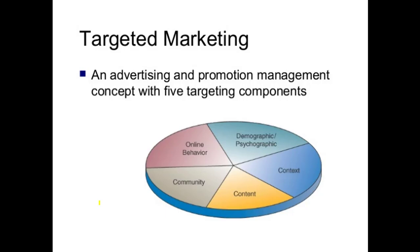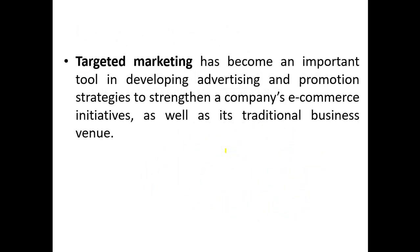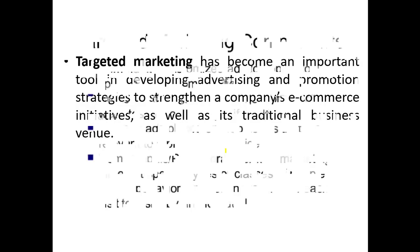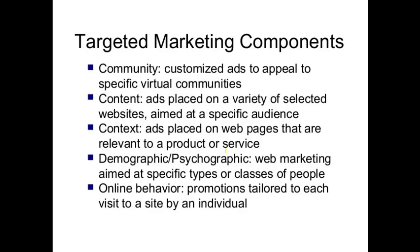Targeted marketing is an advertising and promotion management concept with five targeting components: demographic or psychographic, context, content, community and online behavior. Community means customizing ads to appeal to specific virtual communities. Content means ads placed on selected websites aimed at specific topics. Context means ads placed on web pages relevant to a product or service. Demographic or psychographic means web marketing aimed at specific types or classes of people. Online behavior deals with promotions tailored to each visit to a site by an individual based on preferred products.